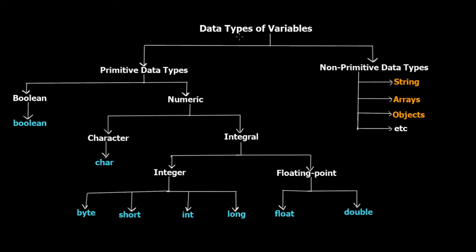There are two basic categories: primitive data types and non-primitive data types. Primitive data types are the built-in basic types already existing in Java. Non-primitive data types are complex types we create — like strings, arrays, objects, classes, and so on. Primitive data types are further categorized as boolean and numeric. Boolean is only one data type — boolean itself — storing true or false.